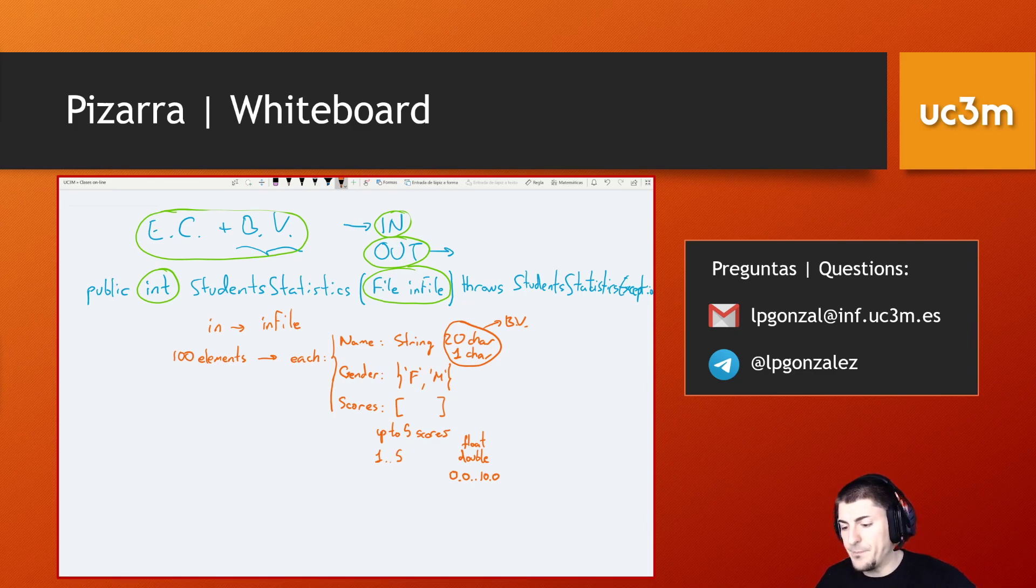Perfect, so we have the format for the input. And the output is the amount of students that pass the subject. So probably the function will do some calculation with the scores and average. And if the result is higher than a specific threshold, maybe 5.0, then the student will count as a student that passed the subject.